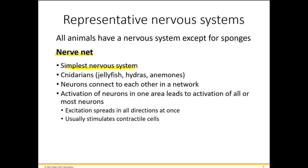The nerve net includes jellyfish, hydras, and sea anemones — cnidarians. They have neurons connected in a network such that when one neuron is activated, it activates all or most of the others. One area responding to a stimulus causes all neurons to be excited at once, which usually stimulates contractile cells.